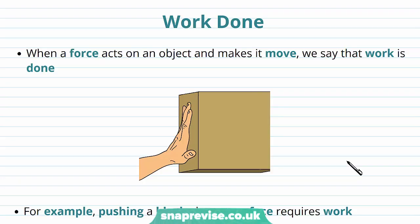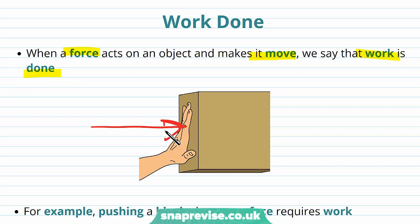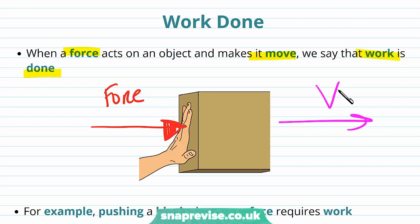First of all we need to understand what work done actually is, how it's defined and how we can calculate it. When a force acts on an object and makes it move, we say that work is done. So for example if you were to push a box along the ground, we apply a force to it, and since you're applying a force to this box and causing it to move with a certain velocity v, we say that work is done on the box.